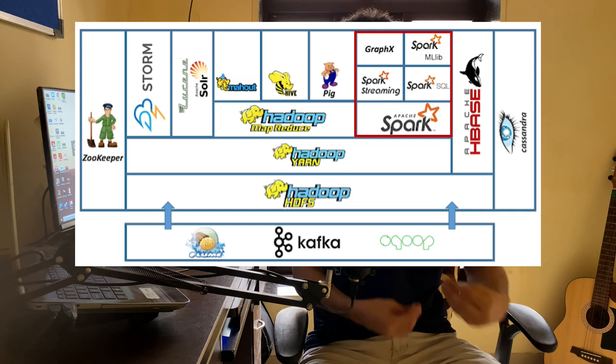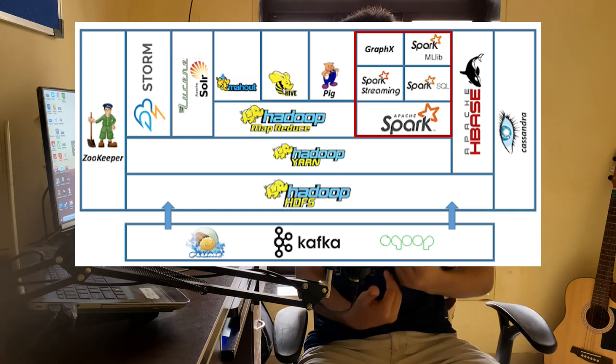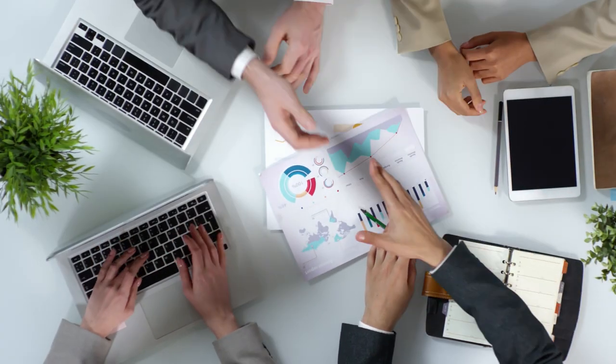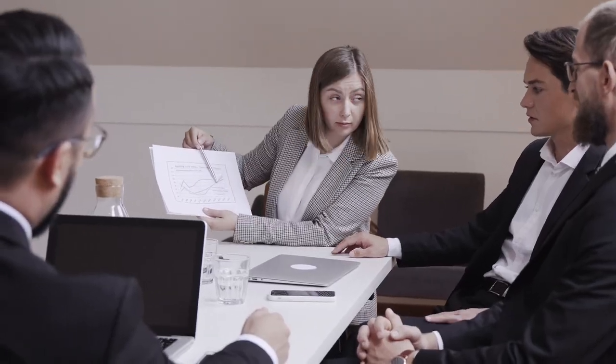Now we have the data warehouse ready, but it is difficult for business users to understand raw numbers. We can build dashboards to show data visually. Everyone wants to see how their business is performing so they can make decisions. All projects in the data world have one goal: to provide value to the business. You can use any visualization tool — Tableau, QuickSight, Data Studio, or even simple Python code — as long as it provides value.